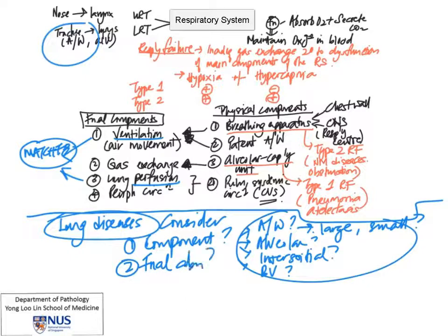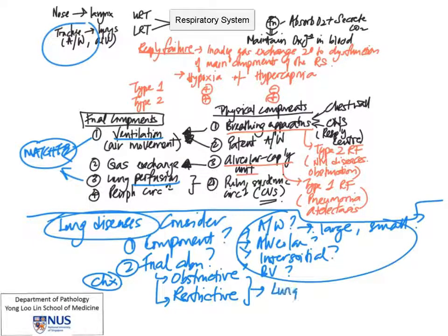The next thing to bear in mind is the functional abnormality that is seen. Would this be obstructive lung disease or restrictive? These are the two main abnormal patterns you would see. Clinically, these are mostly seen in chronic diseases, and lung function tests would be able to tell these apart.